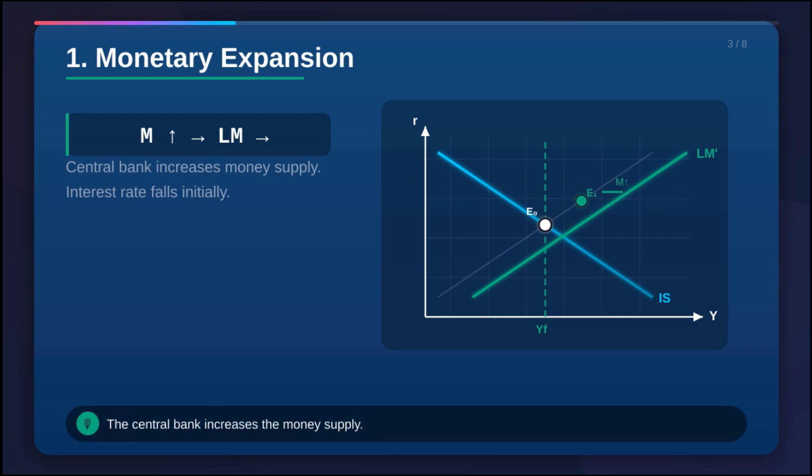Right. And usually cheap money is a good thing. Businesses see those low rates and they think, okay, now's the time to expand. Exactly. Aggregate demand starts to surge because capital is, for all intents and purposes, on sale.